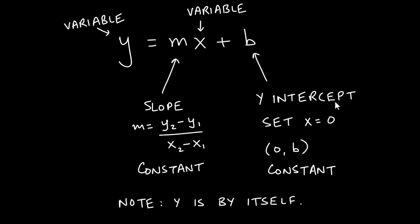The y-intercept can be found by setting x equal to zero. In the equation y = mx + b, if x is replaced by zero, then m times zero is zero, and you're left with y = b. So the coordinates of the y-intercept are always (0, b), and b is a constant — it cannot be a variable. Also note that in slope-intercept form, the y is by itself on one side of the equation.